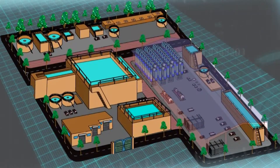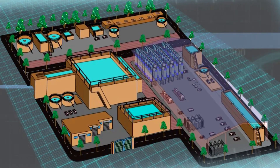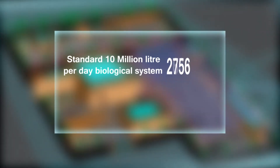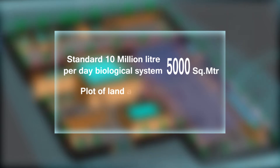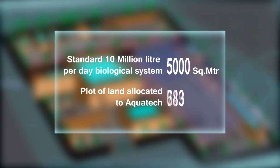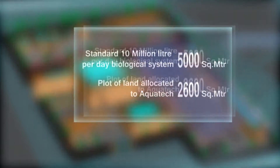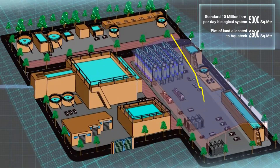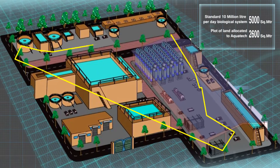A standard 10 million liters per day biological system followed by recycle normally would require a minimum area of 5,000 square meters. However, AquaTech was allocated a plot of land only 2,600 square meters and triangular in shape to construct the 10 MLD plant.